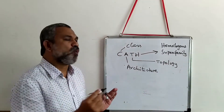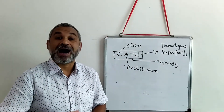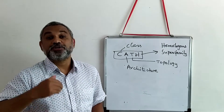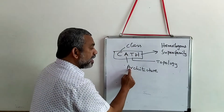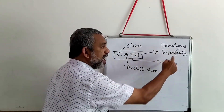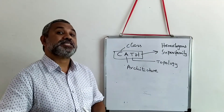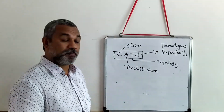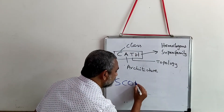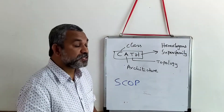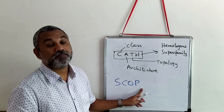This is one type of arrangement used to understand domains — the CATH arrangement: Class, Architecture, Topology, and Homologous Superfamilies. There is a second category of arrangement of domains called SCOP, which stands for Structural Classification of Proteins. Let us focus more on CATH.